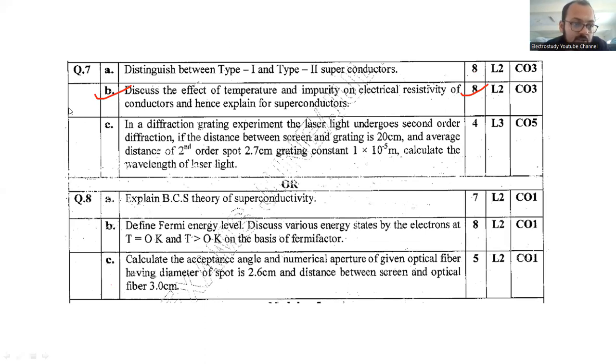Question 7c is a numerical example. Read carefully: In a diffraction grating experiment, laser light undergoes second order diffraction. If the distance between screen and grating is 20 cm, the average distance of second order spot is 2.7 cm, and grating constant is 1 × 10⁻⁵ m, calculate the wavelength of the laser light.